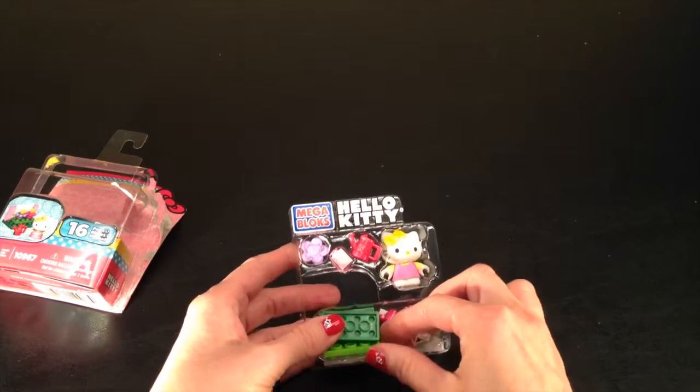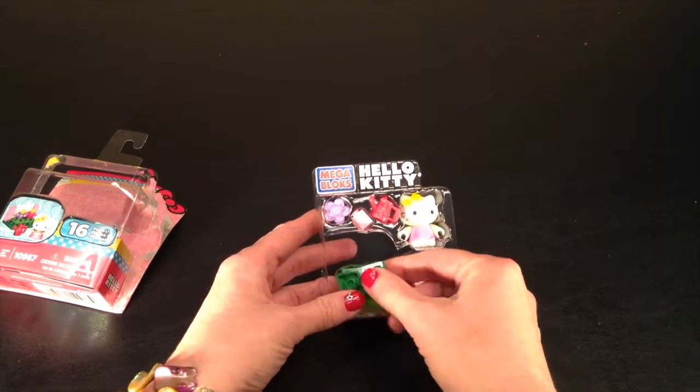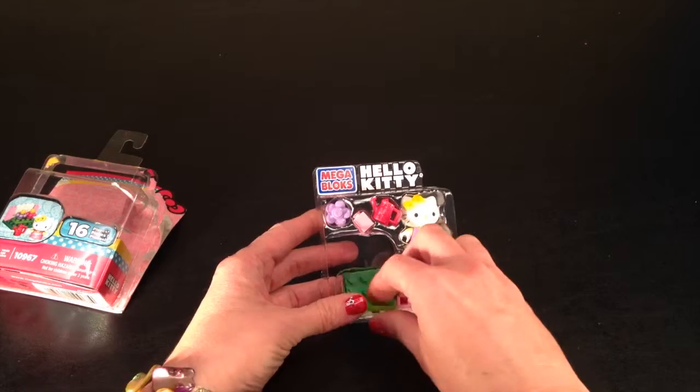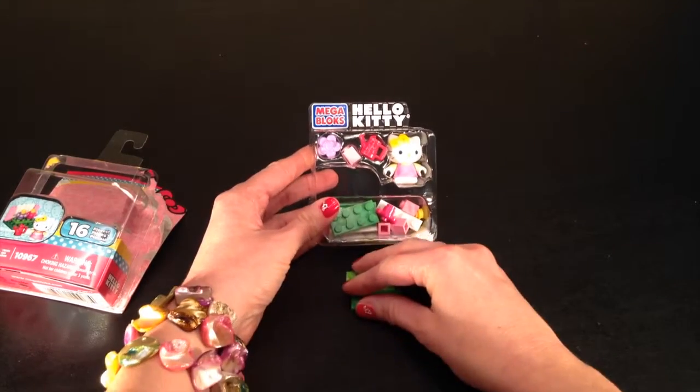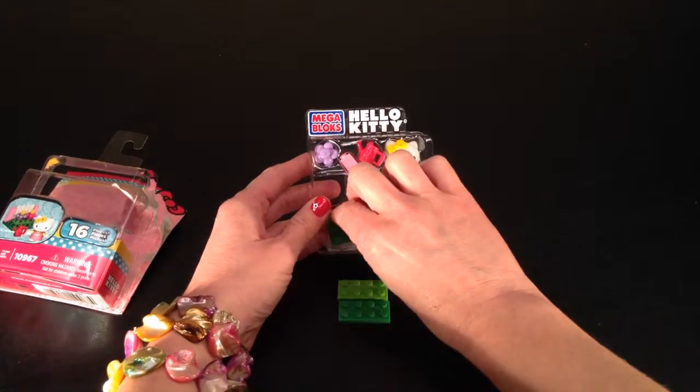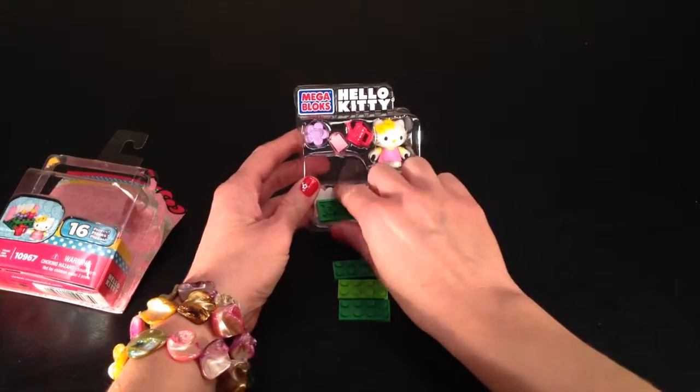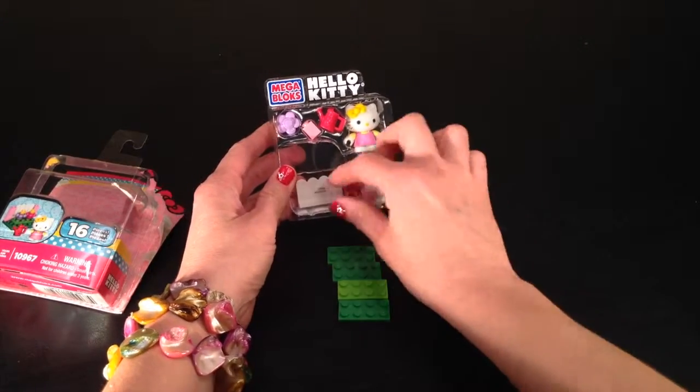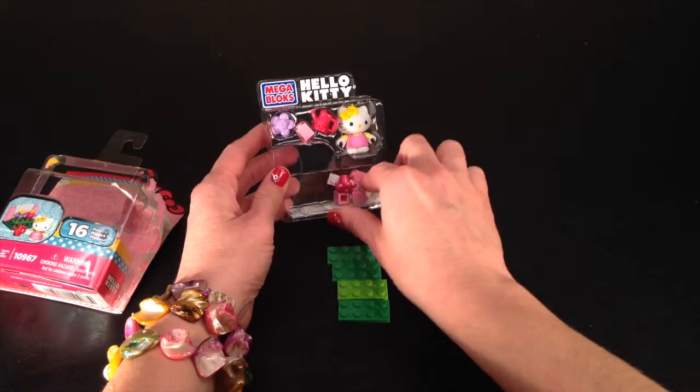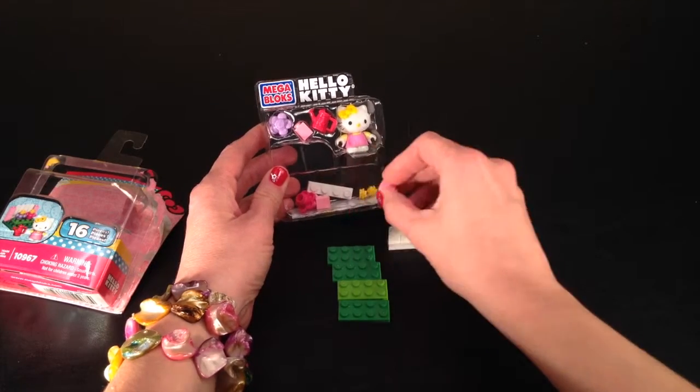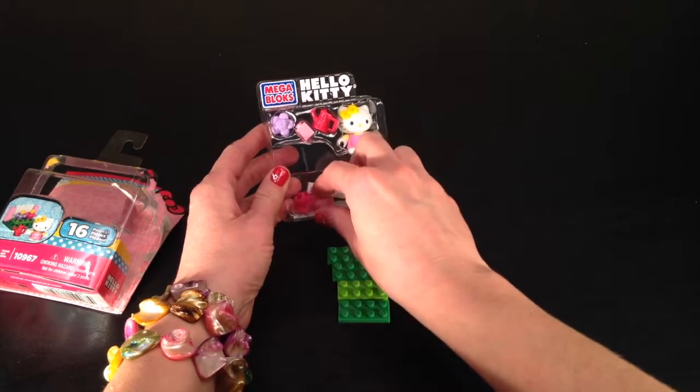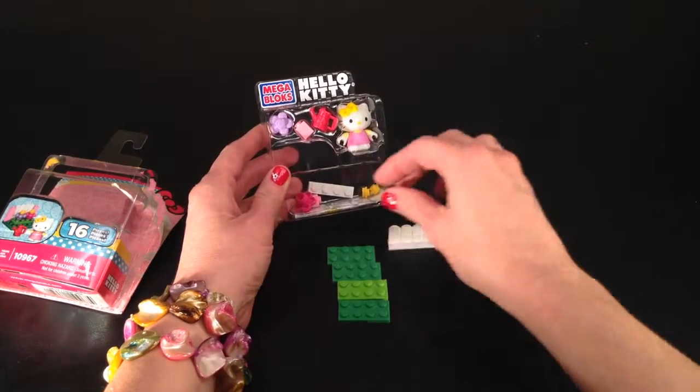I'm going to take these things out first because they are getting ready to fall out. These are grass and our fence pieces, or fence piece I should say, and then these little pieces are also part of the fence.